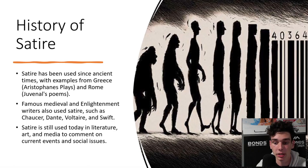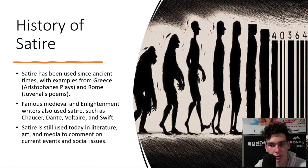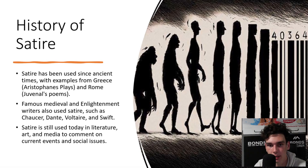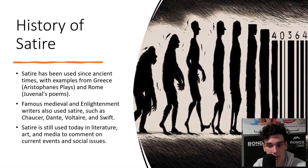In the medieval and enlightenment period, satire was often used in the form of poetry and short stories which criticised aspects of society, including the church, politicians, and social classes. In the modern era, satire has been used in a variety of forms including literature, art, and media, including satirical cartoons, TV shows, and movies, which have all become popular ways to comment on social and political issues.